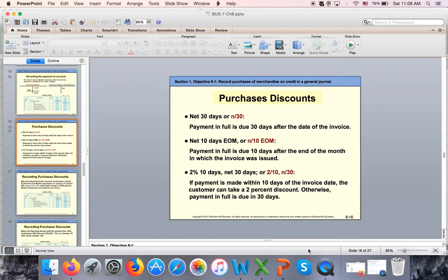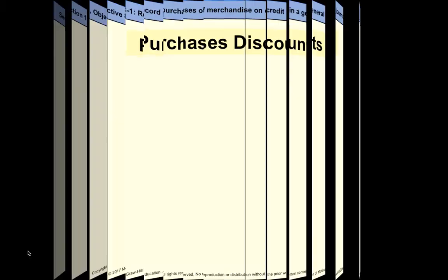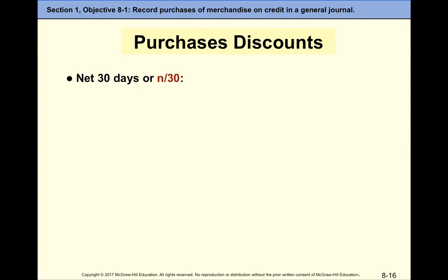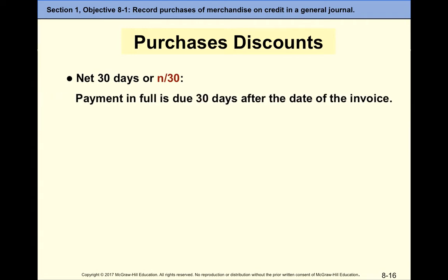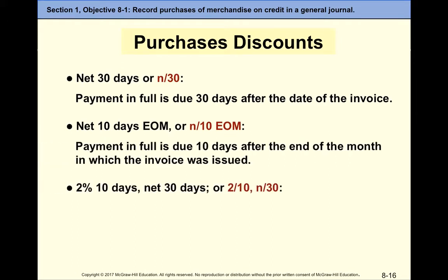These are different credit terms. Net 30 means there is no discount — we have 30 days to pay the invoice. Net 10 EOM means 10 days from the end of the month, not from the invoice date. So if the invoice is dated March 27th, we count 10 days from March 31st. With 2/10 net 30, I have 30 days to pay, but if I pay within 10 days I get a 2% discount.